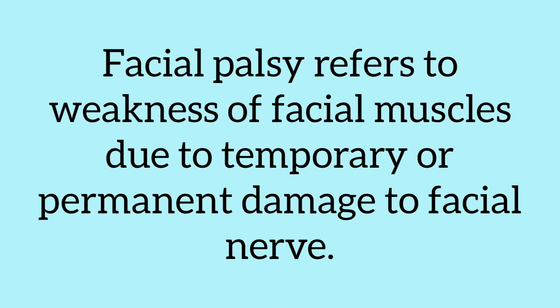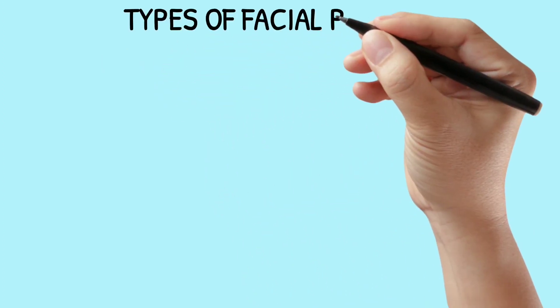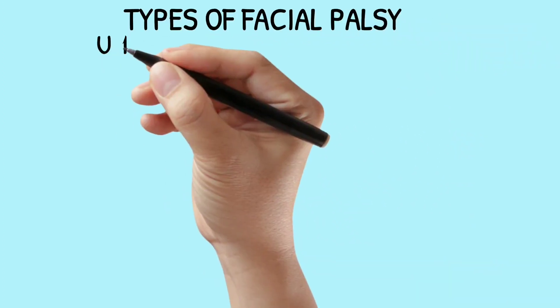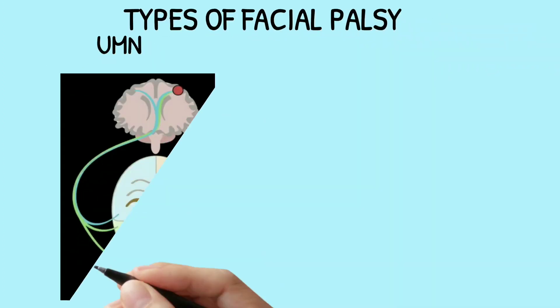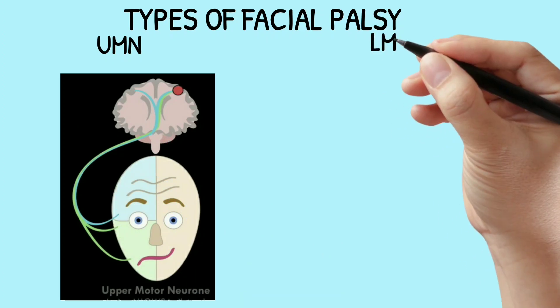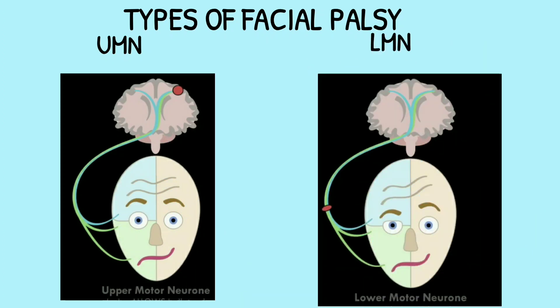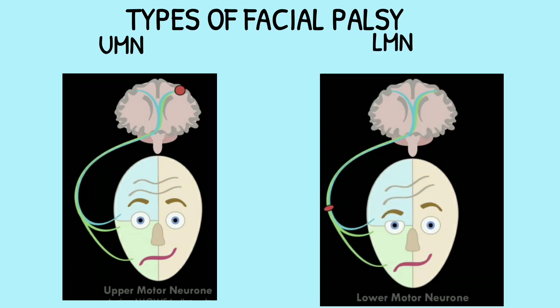Facial palsy refers to weakness of the facial muscles resulting from temporary or permanent damage to the facial nerve. Facial palsy is of two types: UMN type, or central facial palsy, and LMN type, or peripheral facial palsy.